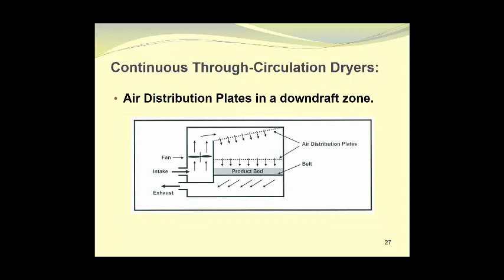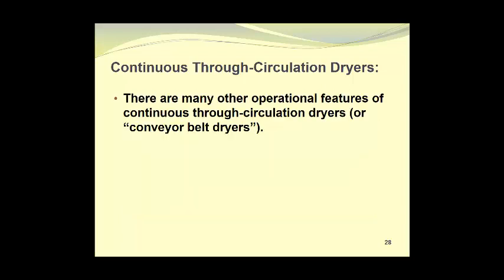In a downdraft zone, there are sometimes two sets of air distribution plates. Here we see that they are positioned upstream of the product bed so that the air has to blow through them before it contacts the material being dried. In this way, we also get a uniform distribution of air traveling in the downward direction.